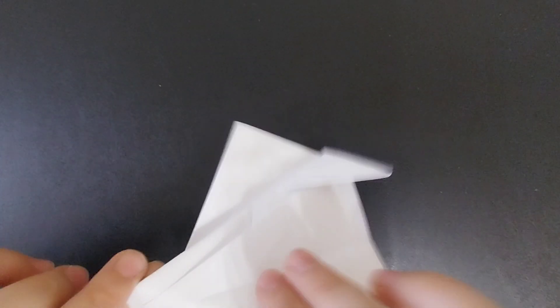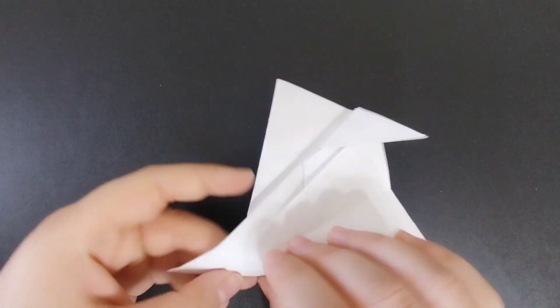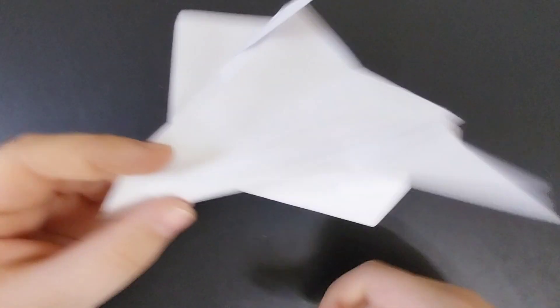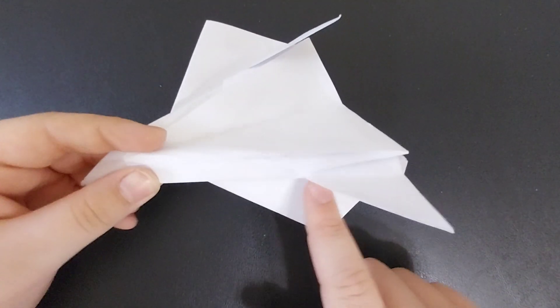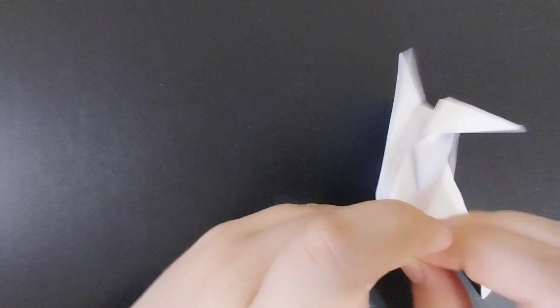Which you're going to pull along the tail fins layer, and you're going to jet fold it from about there or a little further than that, so there to there. Make that crease.